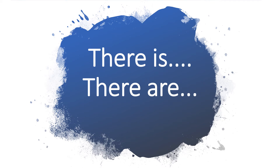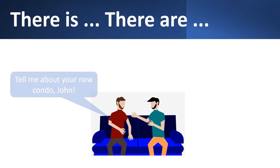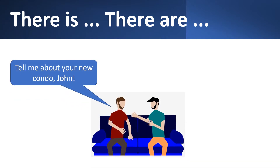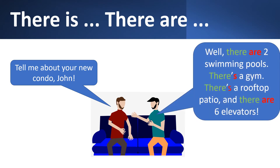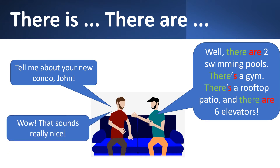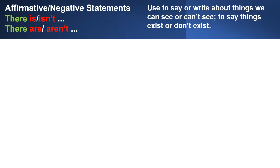Let's learn about there is and there are. Tell me about your new condo, John. Well, there are two swimming pools, there's a gym, there's a rooftop patio, and there are six elevators. Wow, that sounds really nice. How did John tell his friend about his condo? He used the expression there is and there are.